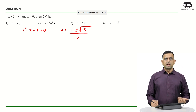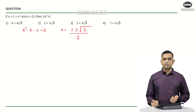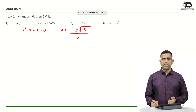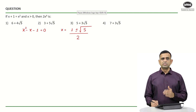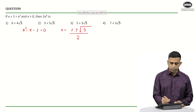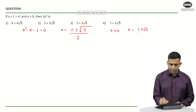Since the value of x is positive, we can negate the value of 1 minus root 5 divided by 2, since that is going to become a negative value. So my value of x, since x is positive, will be 1 plus root 5 divided by 2.